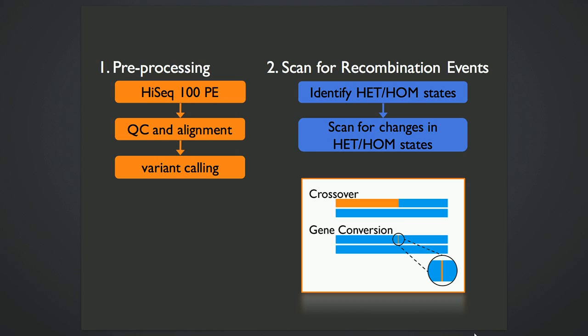So gene conversion looks something like this, for example, where we see a shift from homozygosity to a small region of heterozygosity and back.